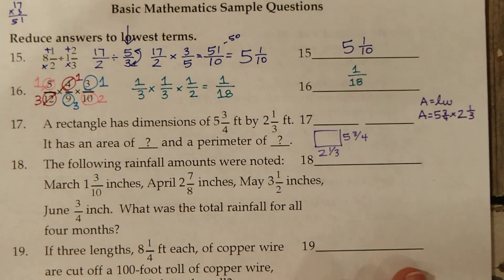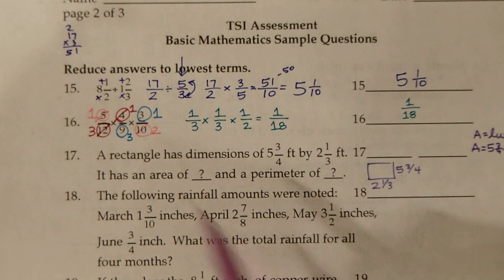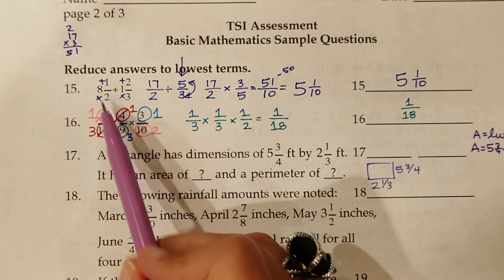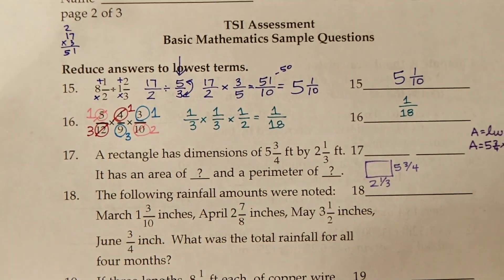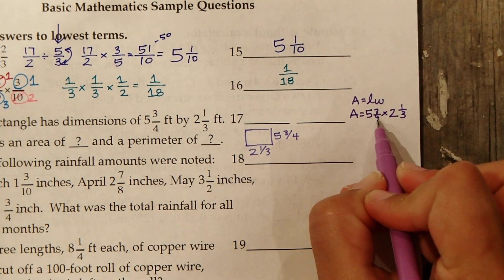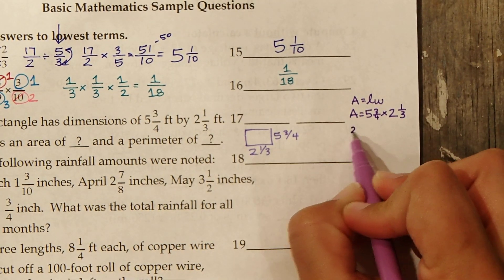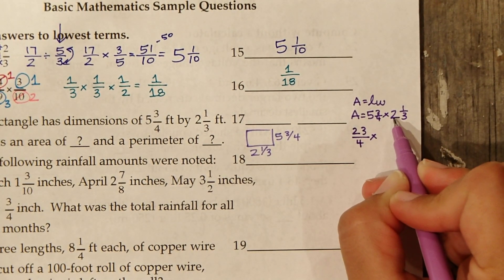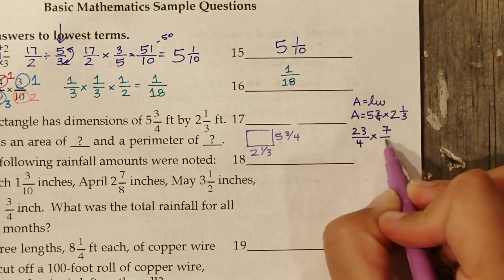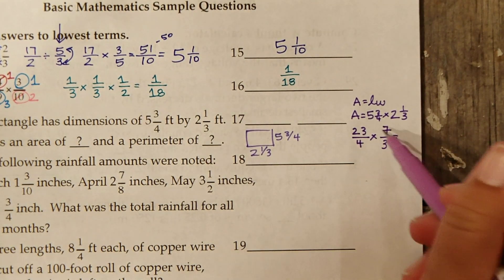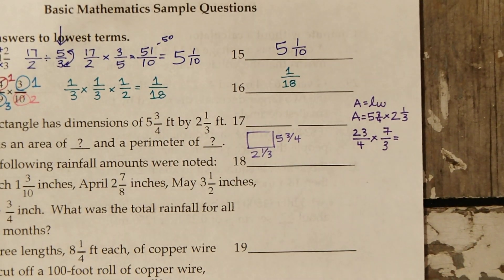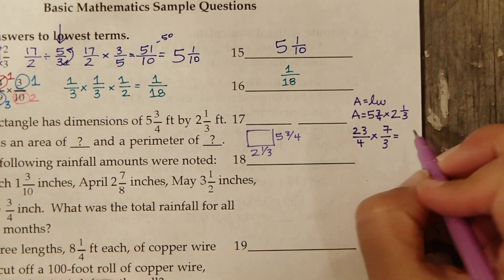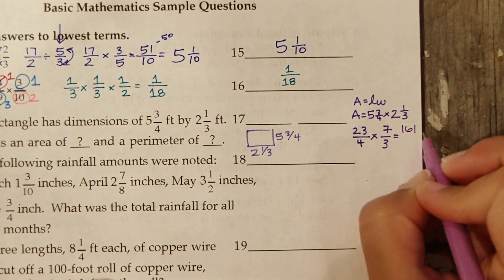The area is 5 and 3 4ths times 2 and 1 3rd. We need to turn both of these into improper fractions, then multiply. 4 times 5 is 20, 20 plus 3 is 23, denominator stays the same. 3 times 2 is 6, 6 plus 1 is 7, denominator stays the same. We cannot cross-reduce anything, so we just multiply. 23 times 7 is 161. 4 times 3 is 12.